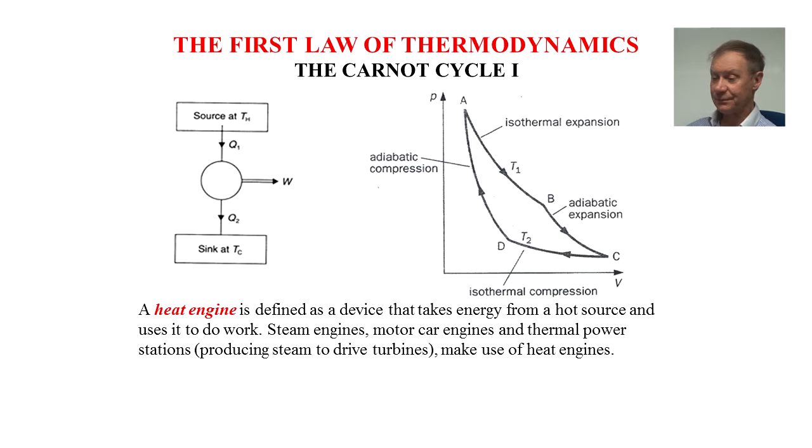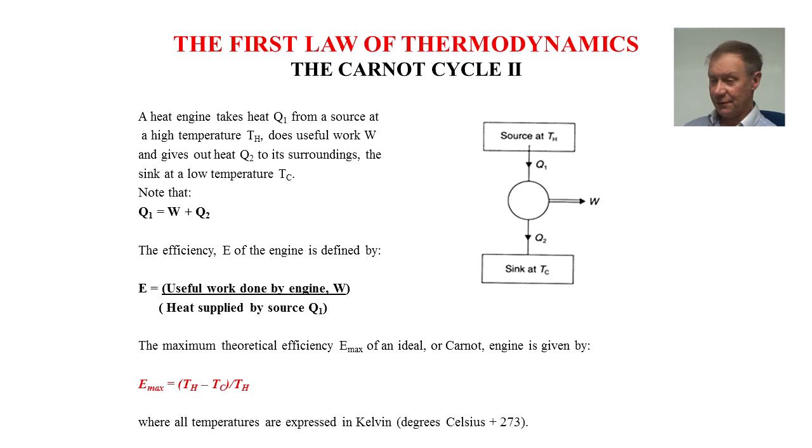To find the efficiency of a heat engine, we use the Carnot cycle. Heat taken in is Q1 from a hot source at temperature TH, and does useful work W, and gives out heat Q2 to the surroundings, the sink at low temperature TC. Q1 equals W plus Q2. The efficiency is given by useful work done by engine W over heat supplied by source Q1. The maximum theoretical efficiency is given by TH minus TC over TH, where all temperatures are expressed in Kelvin.